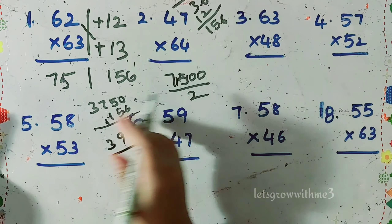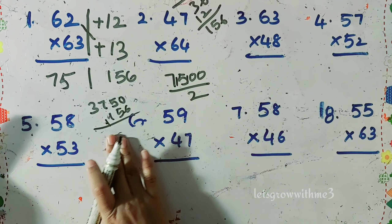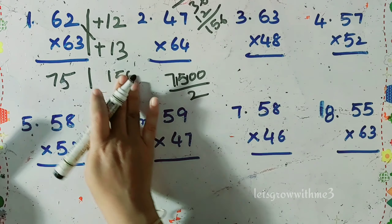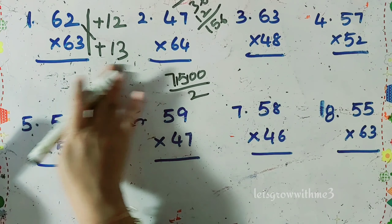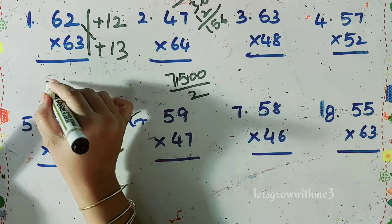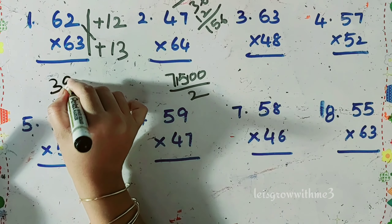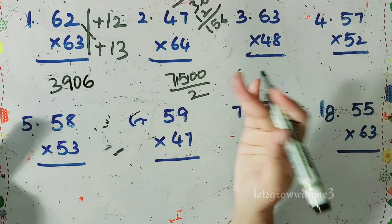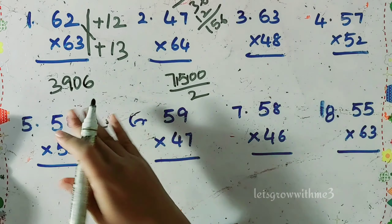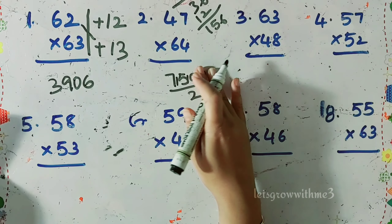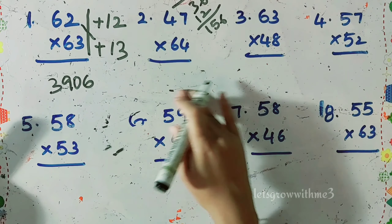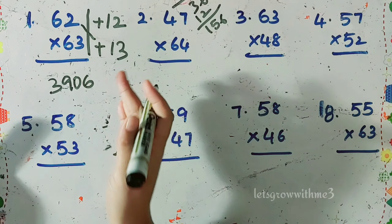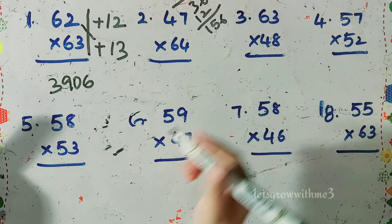Now add 156 to 3750, which gives 3906. So that's our answer for the first example.